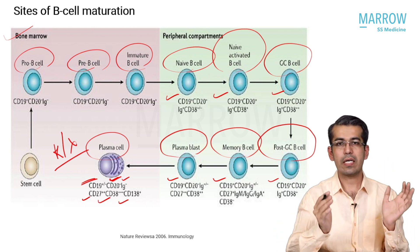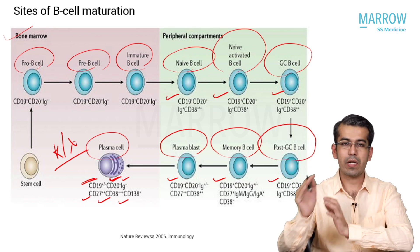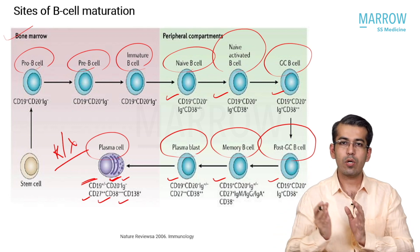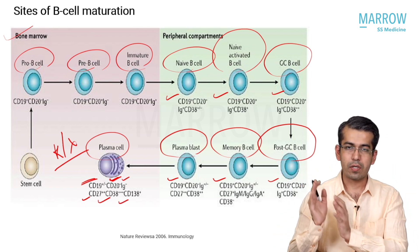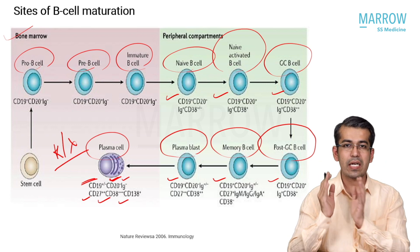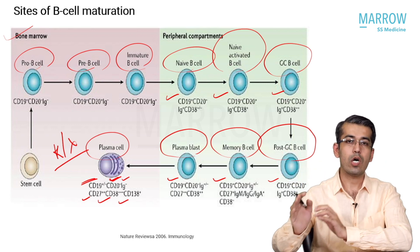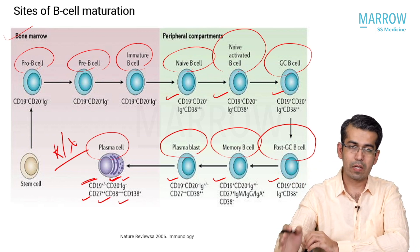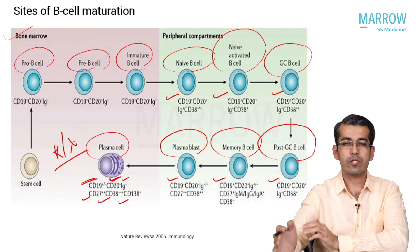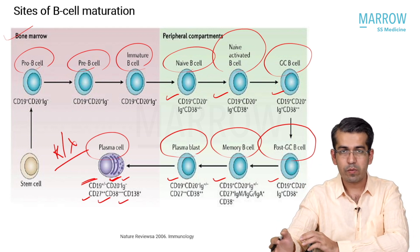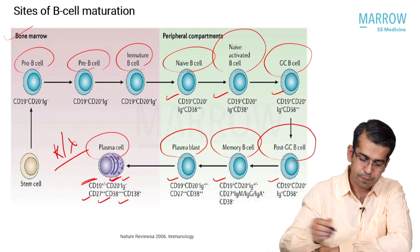When a plasma cell becomes restricted to only kappa or only lambda, that is called light chain restriction. This means the plasma cell has become clonal and is not a normal plasma cell. That plasma cell which is light chain restricted is called a clonal plasma cell, a cancerous plasma cell, or an abnormal plasma cell.